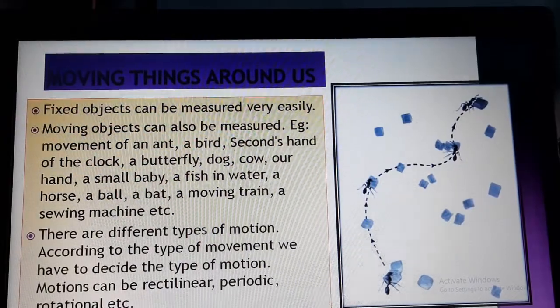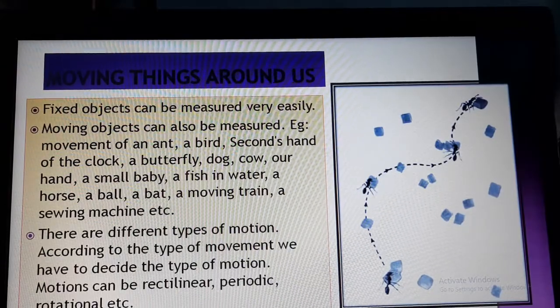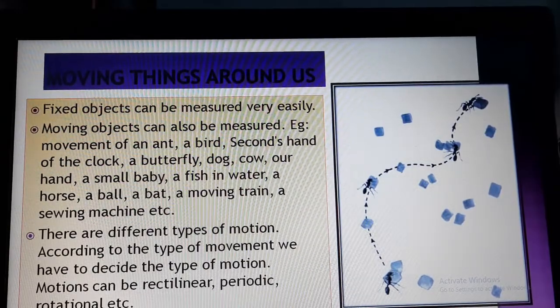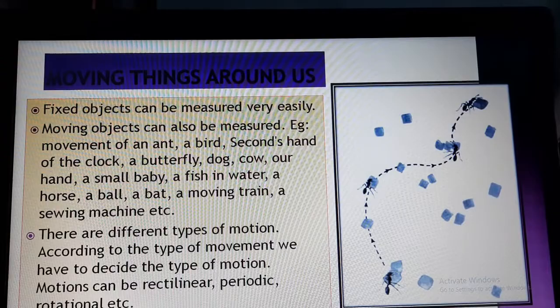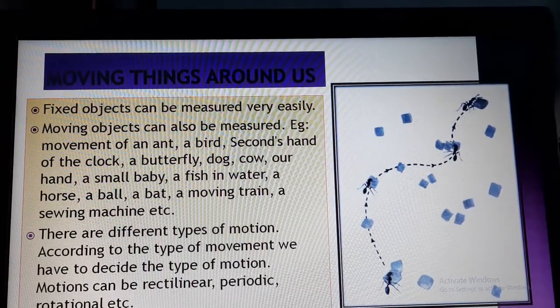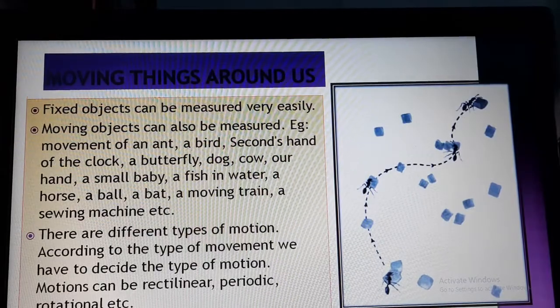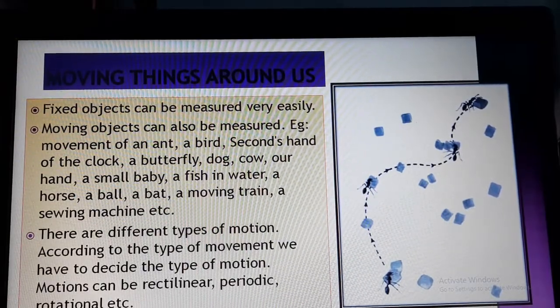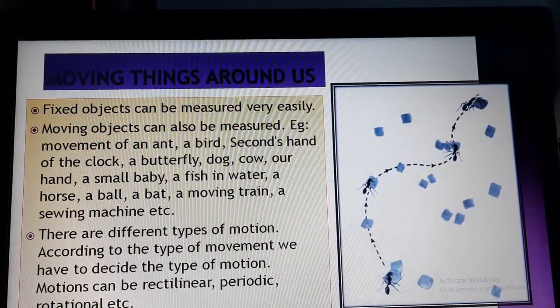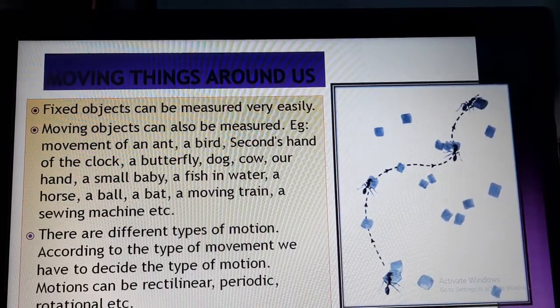So now see students, this ant is a moving body, isn't it? Similarly, there are different other moving bodies. Suppose a bird, then the hands of a clock, then butterfly, dog, cow, baby, fish. See I have given here many examples, moving train, sewing machine. So all these things are, this sewing machine means the machine that we use for stitching, the tailors use. So when the things are moving, then we cannot measure them by the help of our normal measuring instrument of length. Then we need to think of something different. Actually there are different types of motion.